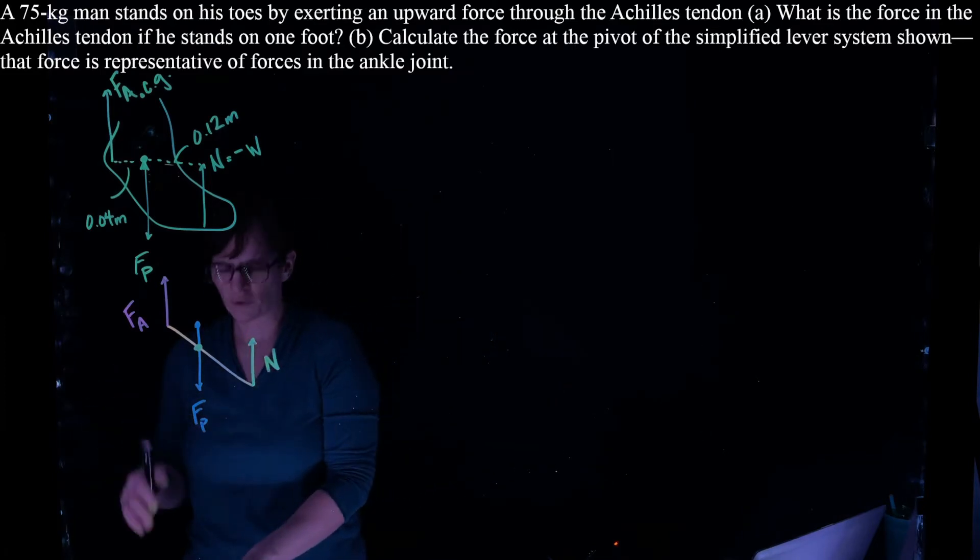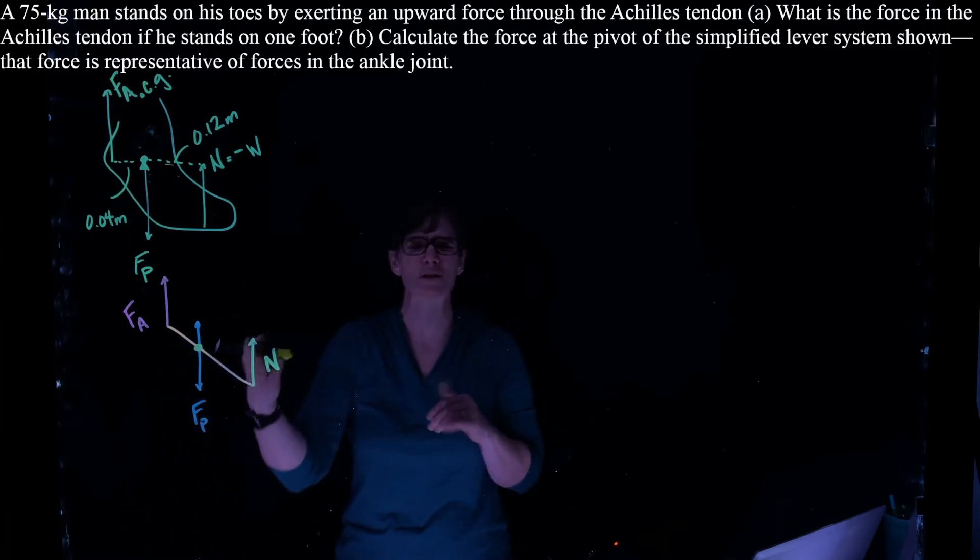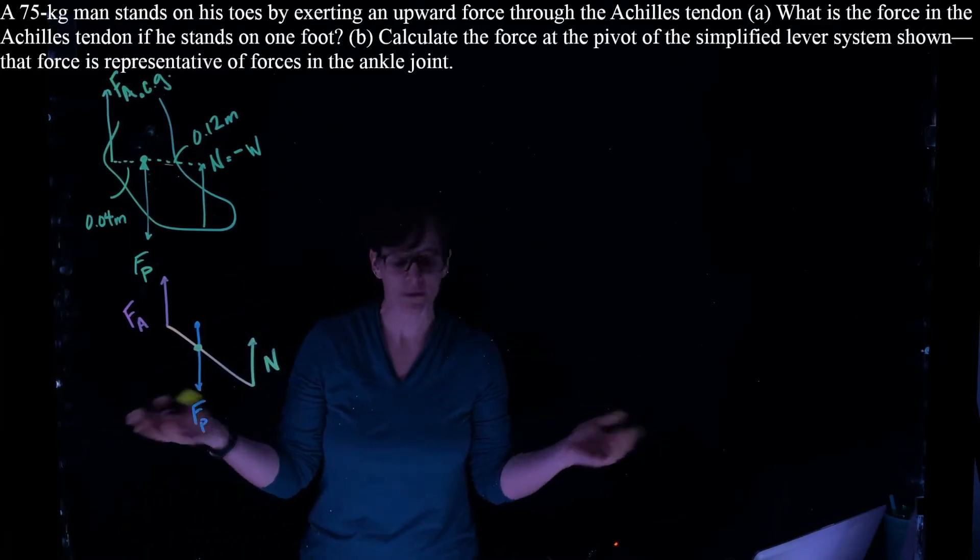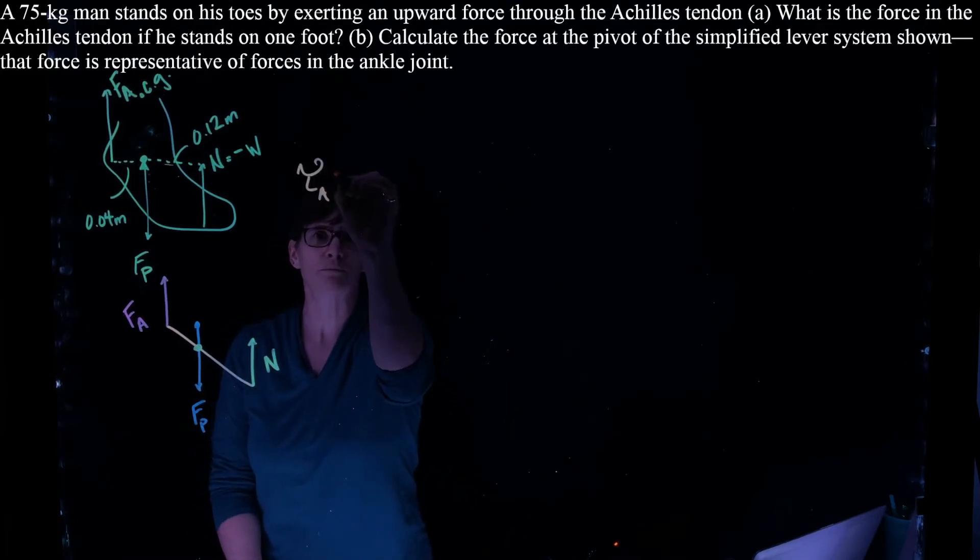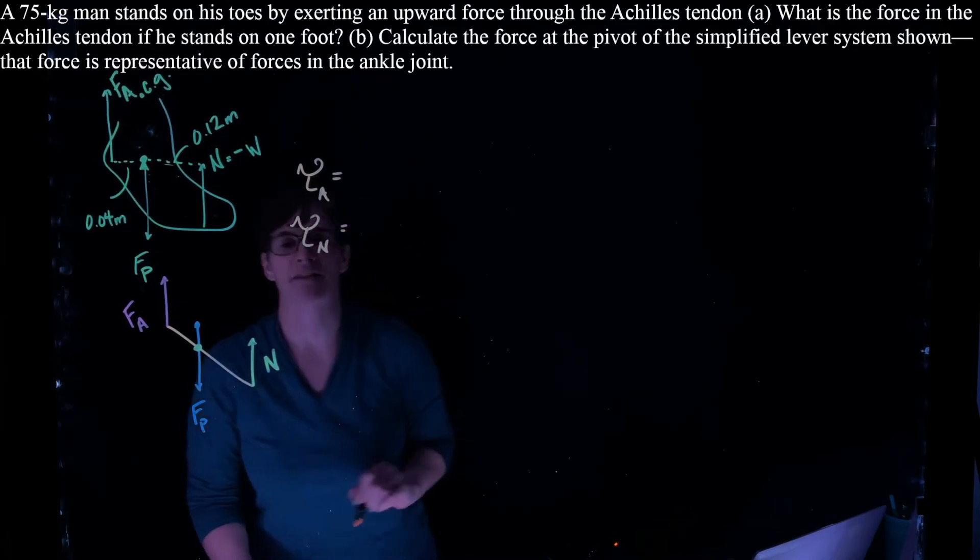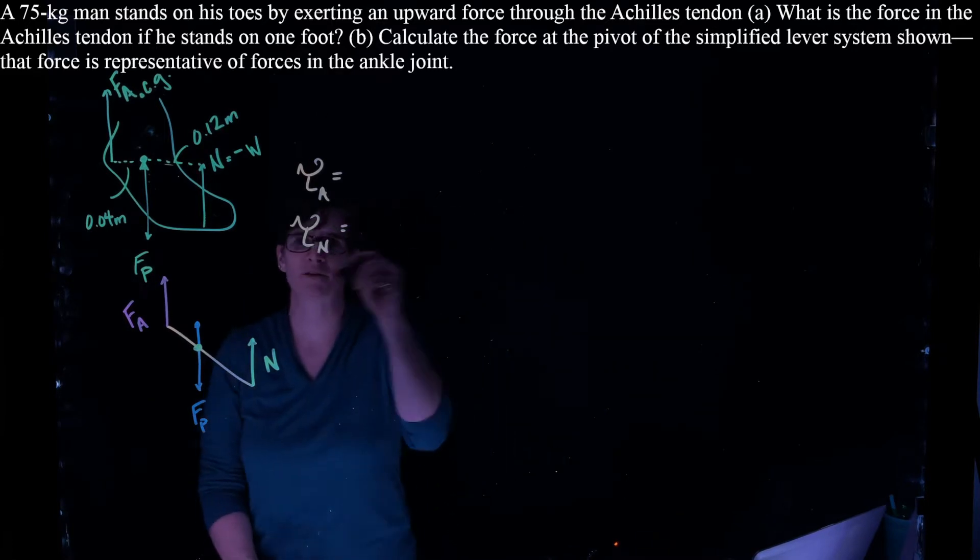So we have three forces: the force of the Achilles, the force of the pivot, and the normal force. Now the force of the pivot is acting at the pivot, so it's not going to induce a torque, but the torque of the Achilles we can determine, and we can determine that torque by the normal force. We're going to use the lever arm way to solve this problem. So how do we do that?